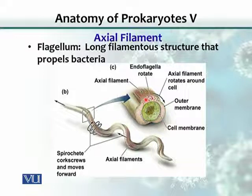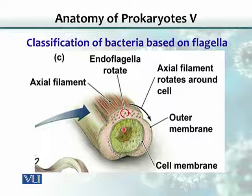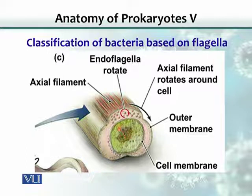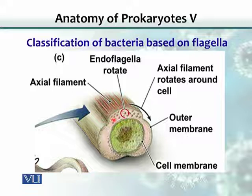Structurally, axial filaments are also made of proteins, much like the flagellum, and they are present only in spirochetes. In the exploded view of the axial filament, there is an outer membrane and an inner membrane. This is the DNA of the nucleoid, and this is the protoplast. Between the inner membrane and the outer membrane, these small flagella make up the axial filament.